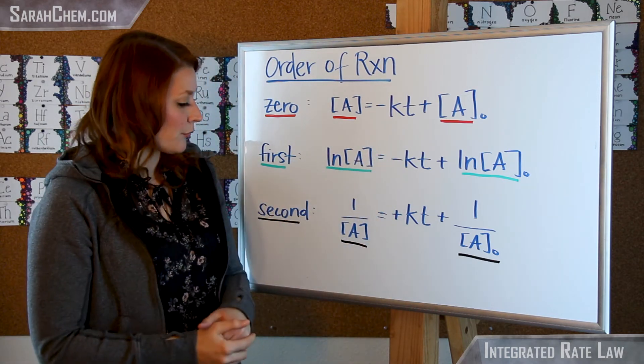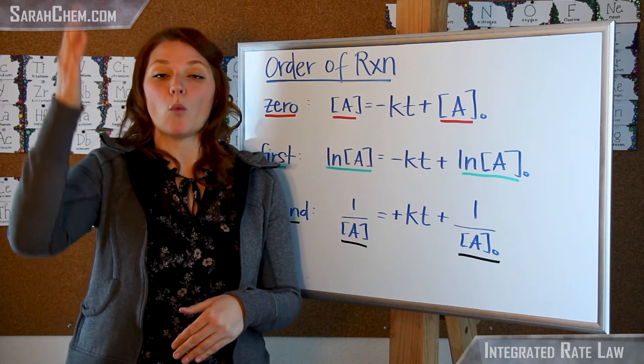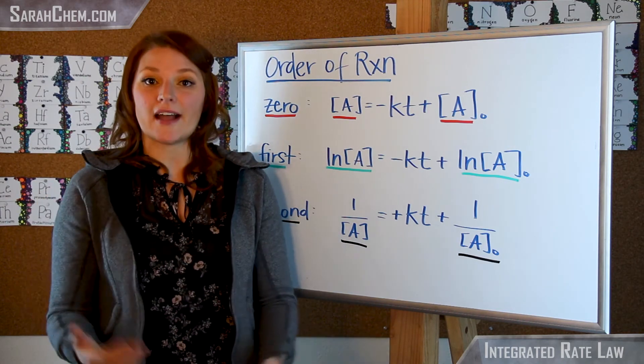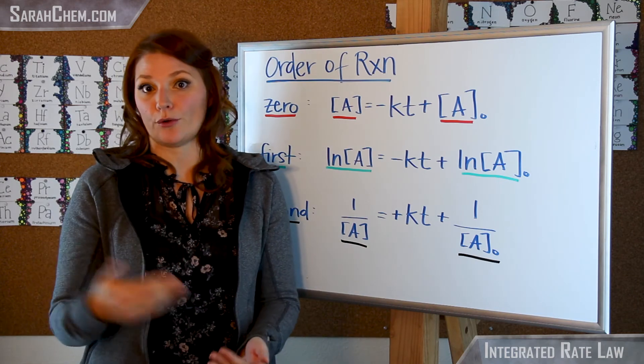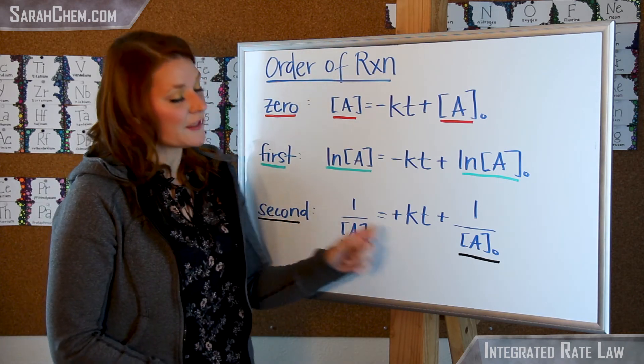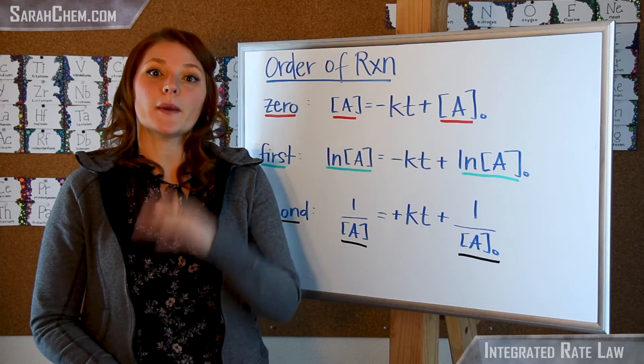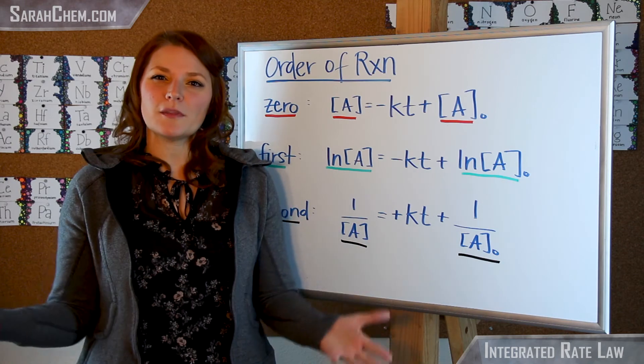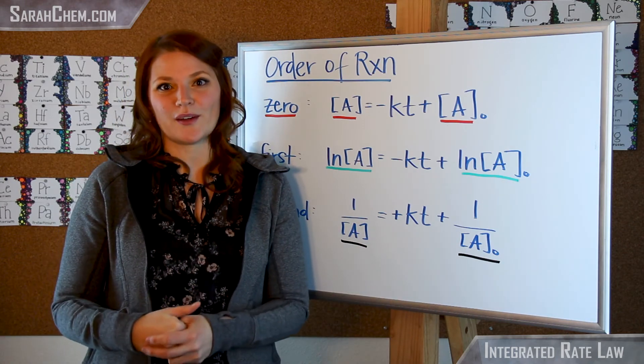Lastly, you can have a second order rate law, and in that case here, you've got one over concentration versus time yielding a straight line. That's going to be indicative of having a second order rate law. The other thing you want to keep in mind is that this here has a positive slope. So it's another way to verify what kind of order of rate law you have. Those are some of the things you want to know when you're dealing with the integrated rate law.